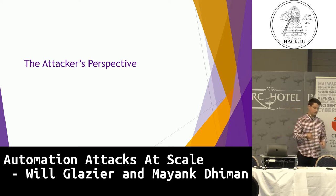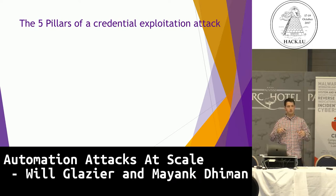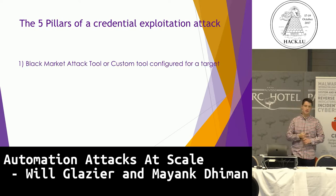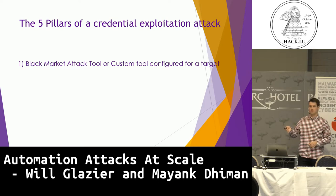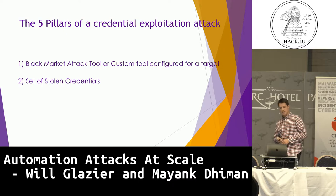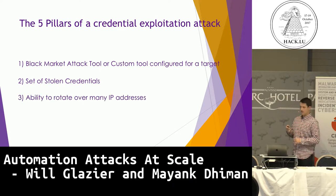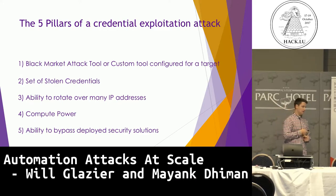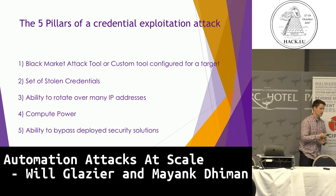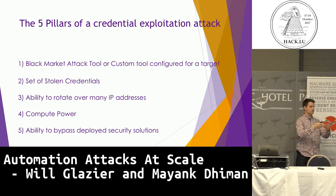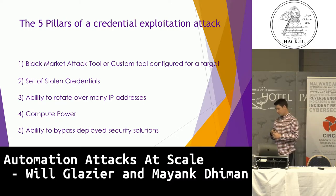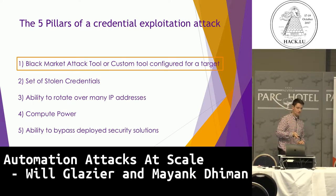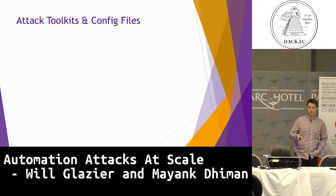Here are the five pillars of a credential exploitation attack from an attacker's perspective. First, I need black market attack tools or a custom tool configured for a certain target. Second, I need to scout my target and have a configuration. Third, I need sets of stolen credentials. Fourth, I need the ability to rotate over many IP addresses and compute power. And fifth, the ability to bypass any deployed solution — finding rate limits and rotating past whatever defenses are in place.